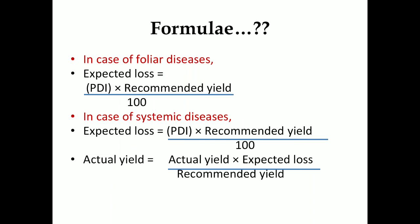These are the formulae. In case of foliar diseases, expected loss equals PDI multiplied by recommended yield, divided by 100. In case of systemic diseases, the same formula applies. For actual yield, actual yield is multiplied by expected loss, divided by recommended yield.